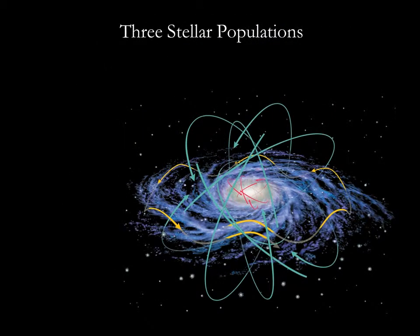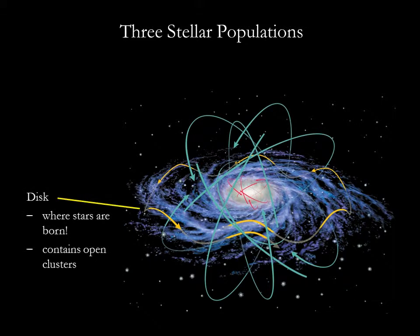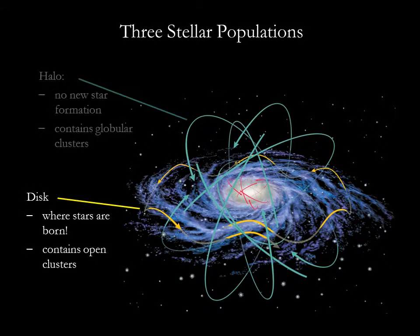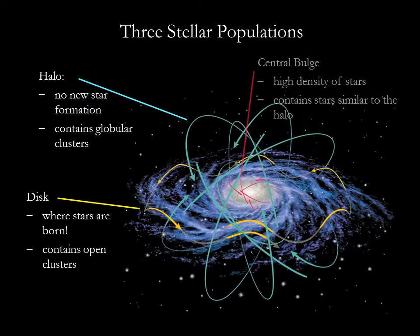We divide our galaxy into three components or populations: the disk population, the halo population, and the central bulge or nucleus of the galaxy.